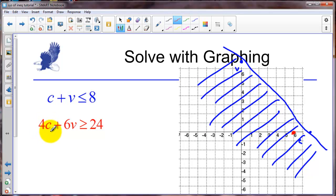And if we hide the c we've got 6v equals 24. So v is 4. And again we can draw a line through those.